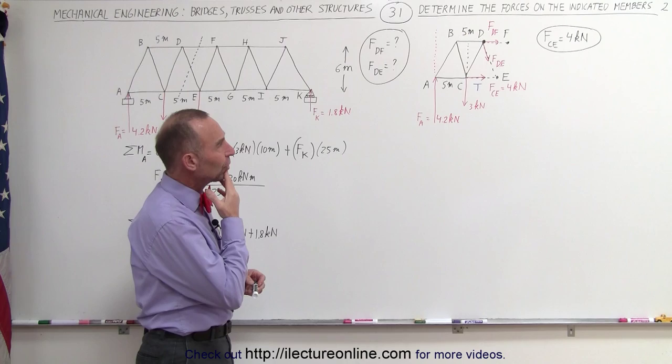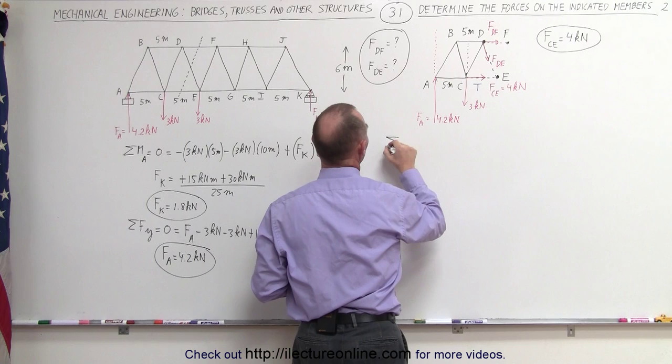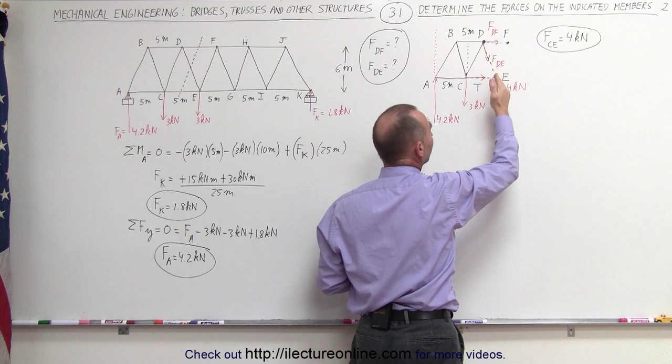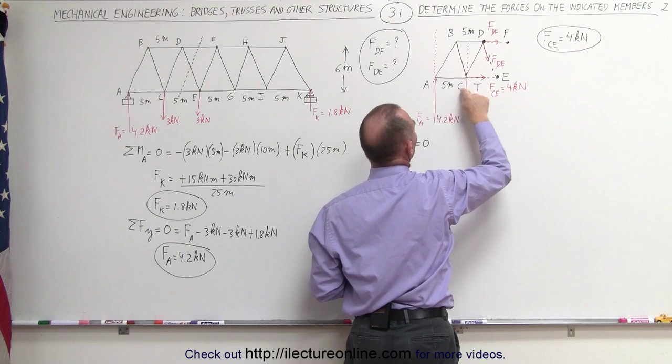Now let's start with the force D to F. What we're going to do is put our pivot point right here and calculate the moment about this point. The sum of all the moments about point E must add up to zero. We picked this point because the line of action of force FDE goes right through that pivot point, so we can ignore it. That eliminates two forces, leaving us with two known forces and one unknown — FDF — which we can solve for.